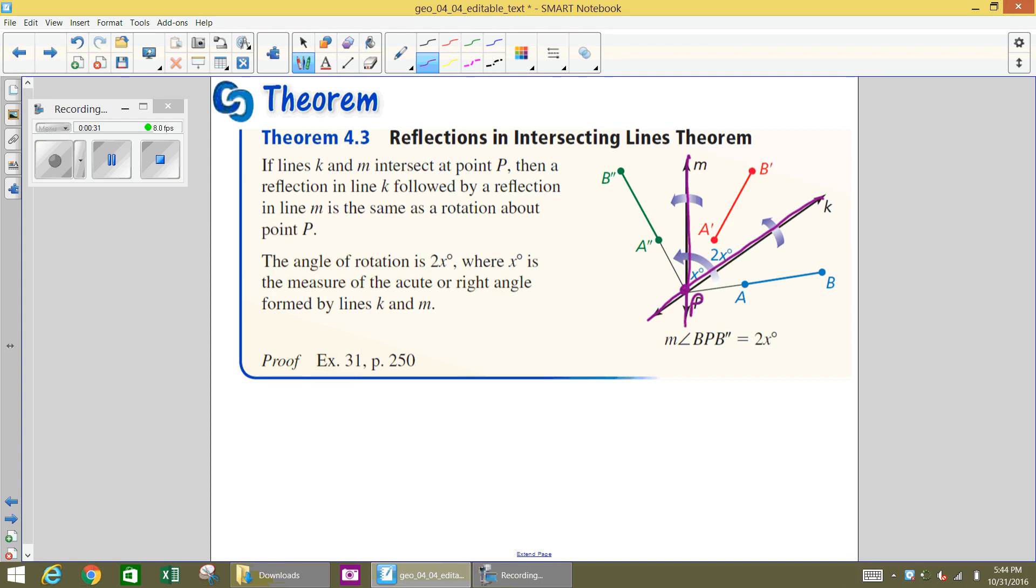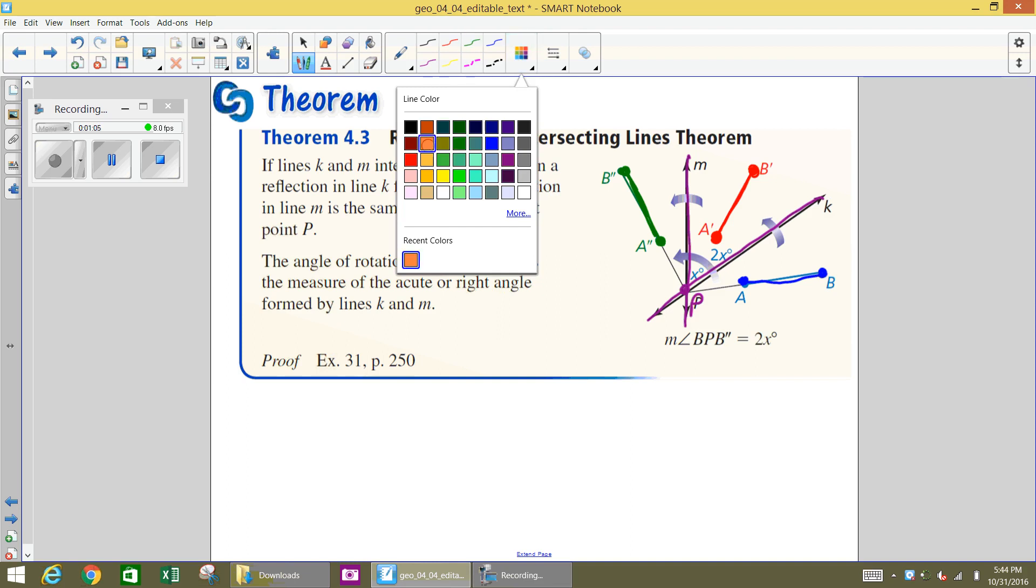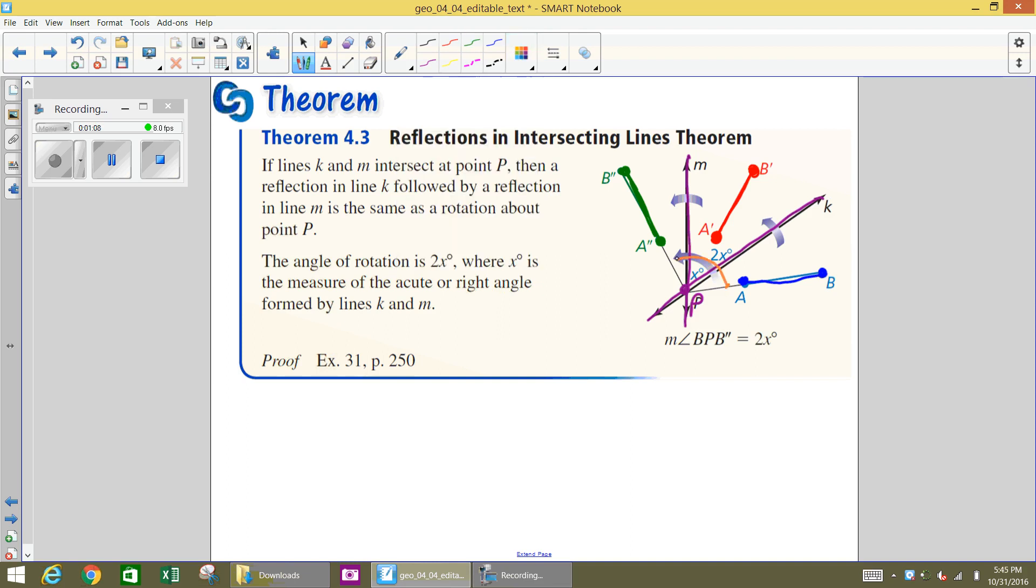So if you take segment AB, and we reflect that over line K or in line K, that becomes A'B', which we are using here in red. And then if I take A'B', and I reflect it across line M or in line M, then I'm going to get A'' and B''. Well, basically, I could have taken segment AB, and I could have just rotated it. So I could have just rotated it from here to here, and I could have then created A''B'' that way.